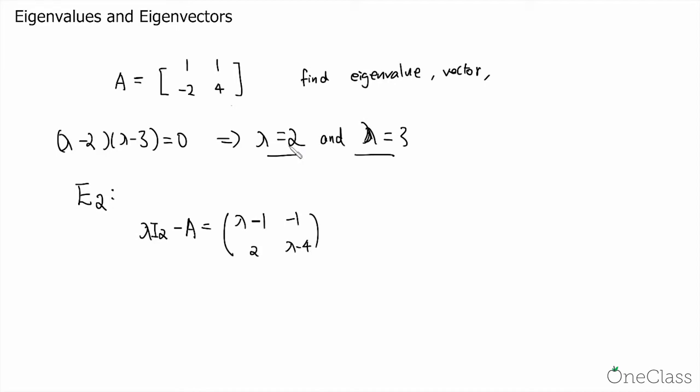And if we sub lambda equals to 2 into this matrix, then we have 2 minus 1, which is 1, negative 1, 2, 2 minus 4, negative 2. And if we try to find the null space of this matrix, then what we can do is we can find its reduced echelon form, and since the first row is a multiple of the second, we can just eliminate the second row, which then gives us 1, negative 1, 0, 0.